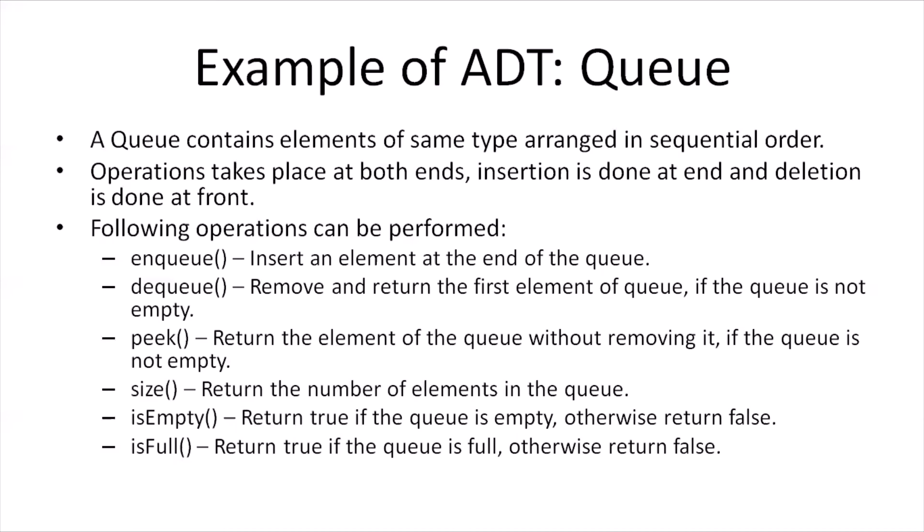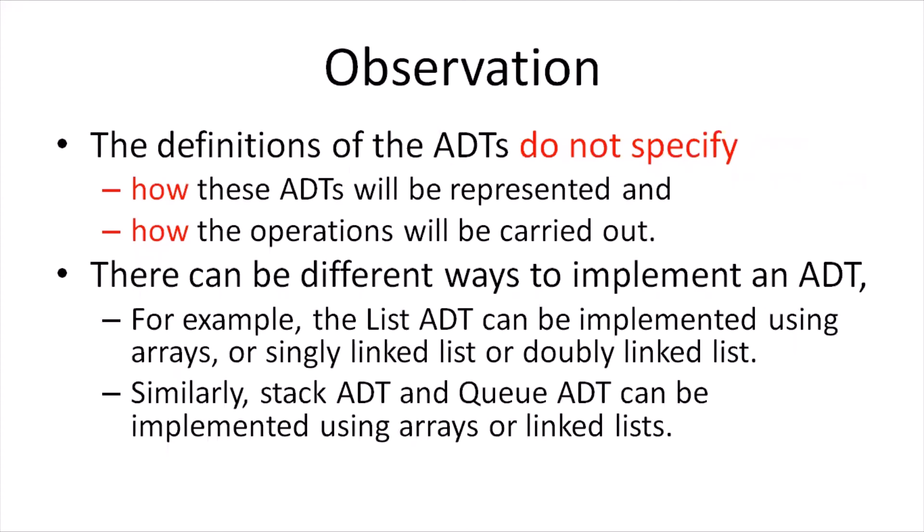Overall, the definition of an abstract data type does not specify how it will be represented or how its operations will be carried out. There can be different ways to implement an abstract data type. For example, the list ADT can be implemented using arrays, singly linked list, doubly linked list, or circular linked list. Similarly, the stack and queue ADTs can also be implemented using arrays or linked lists. Arrays and linked lists are the concrete data types — or data structures — used to implement the operations of abstract data types in a computer system.